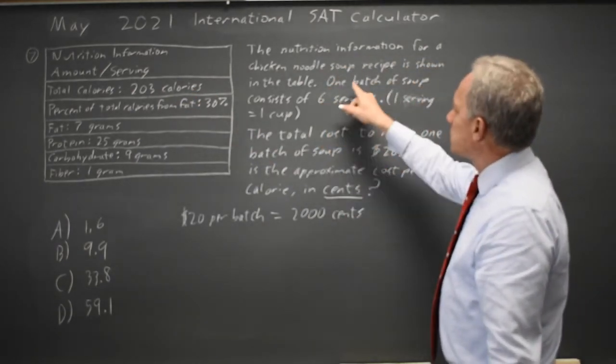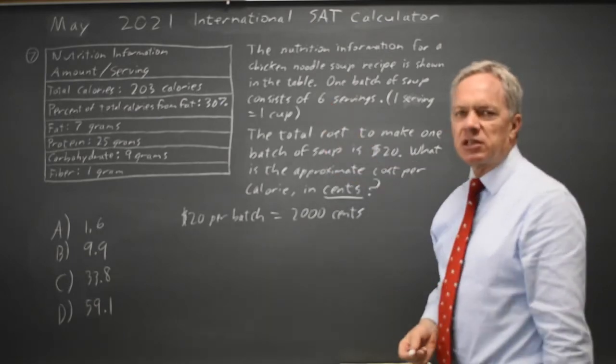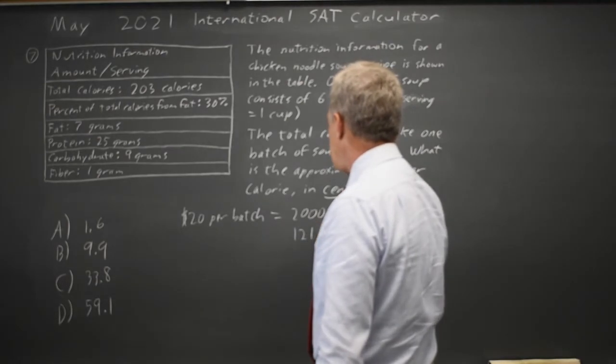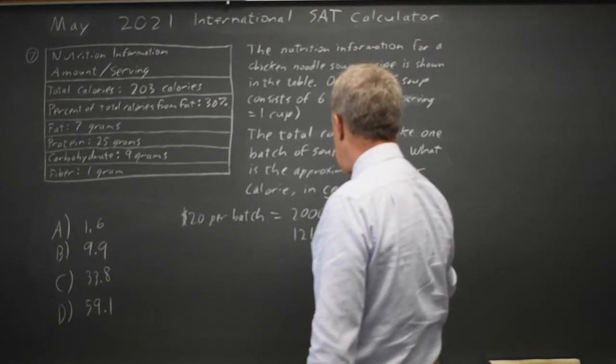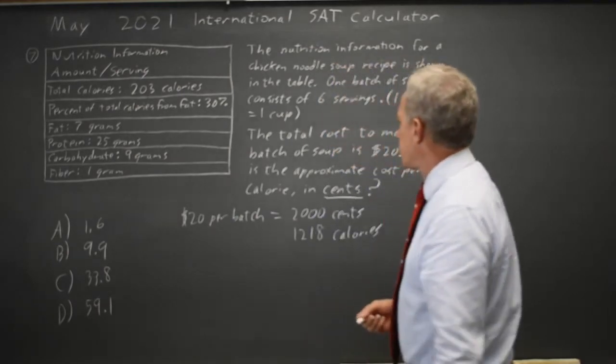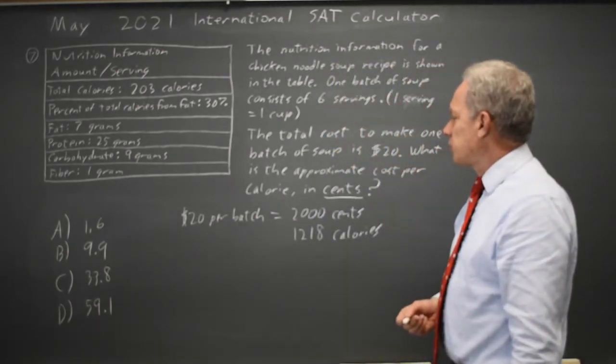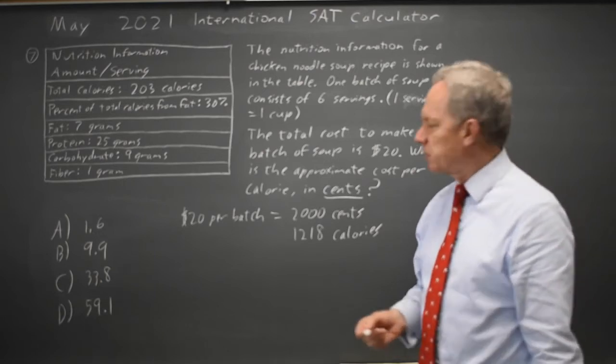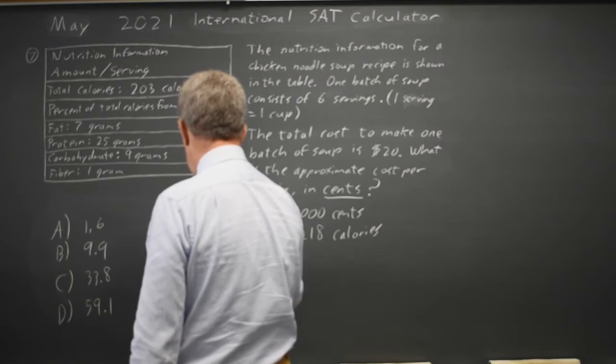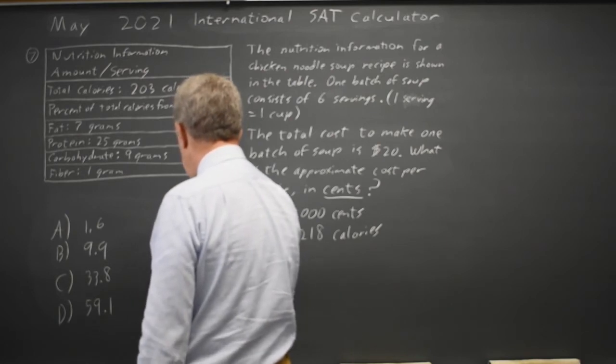One batch has six servings, so there's six times 203, which is 1,218 calories, and they're asking for how many cents per calorie, which is cents divided by calories.